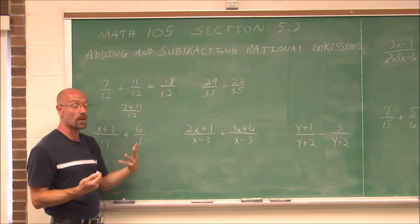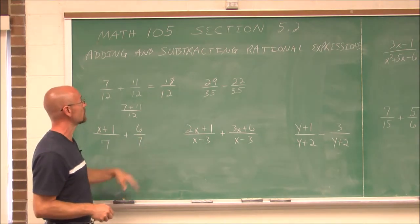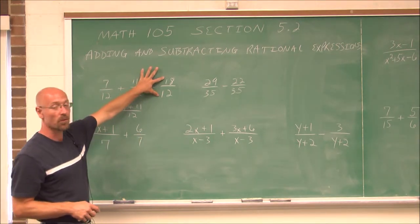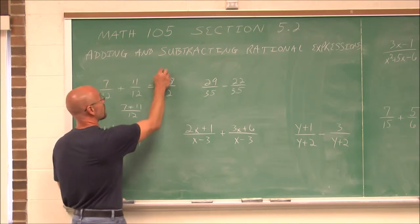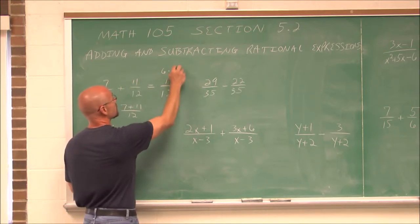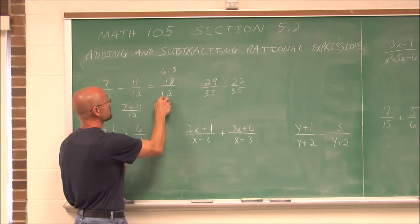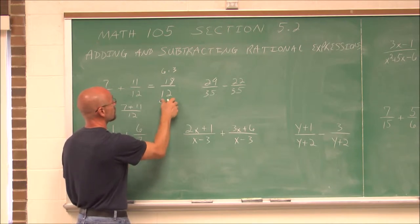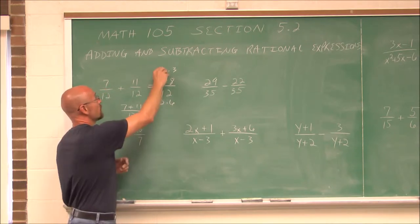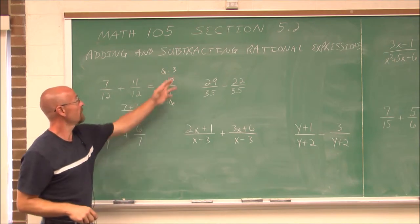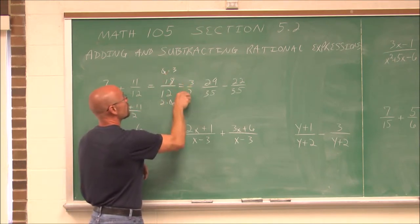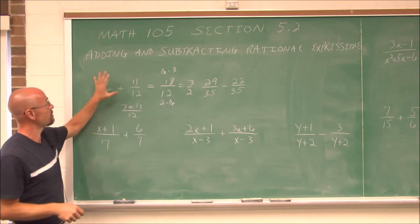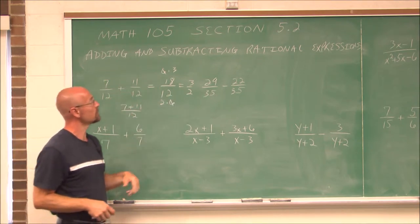We can reduce that, and we always want to reduce our fractions. They both have a common factor of 6, so we can reduce that out — 18 is the same as 6 times 3, and 12 is the same as 2 times 6. So we reduce and get 3 halves, or 3 over 2.